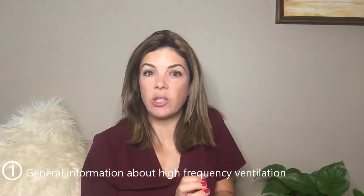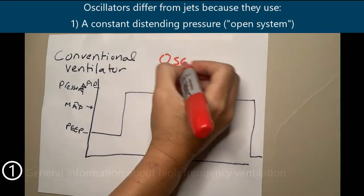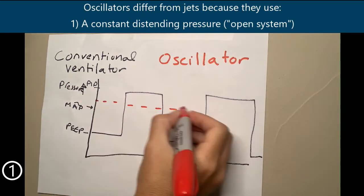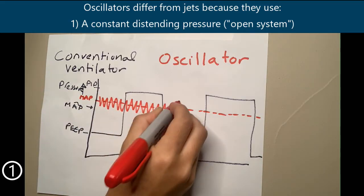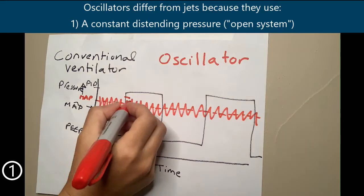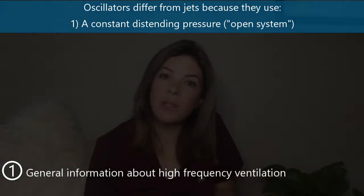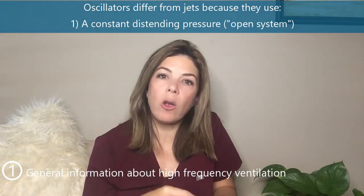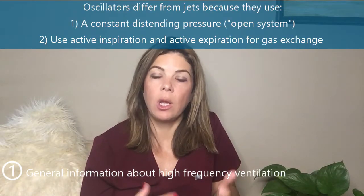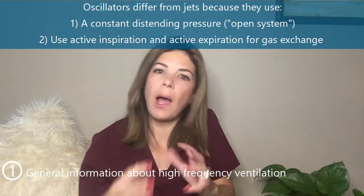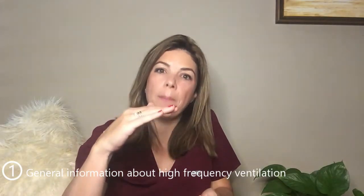Even though oscillators and jets use a very similar form of gas exchange, the main difference with oscillators is that they use a constant distending pressure to keep the lungs open. Oscillators are considered an open system — they have a constant mean airway pressure keeping the lungs open rather than constant cycling between PIP and PEEP. Jet ventilators are a hybrid between high frequency and conventional ventilators and they also use a PIP and PEEP.